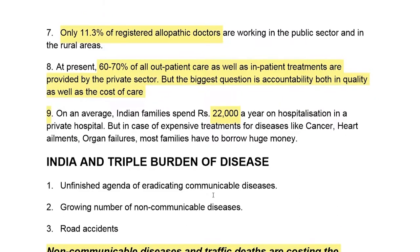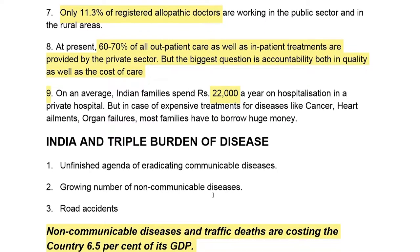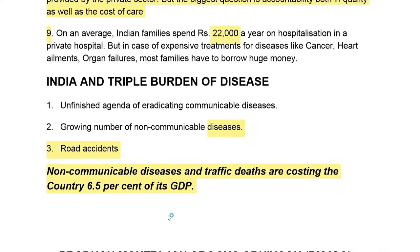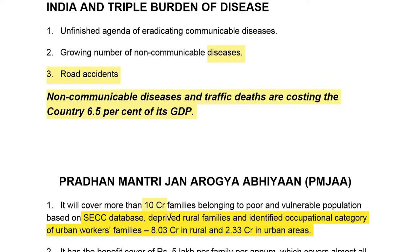The main reasons why the Indian health care system is struggling are three biggest burdens. First, we have an unfinished agenda of eradicating communicable diseases — even today this agenda is not complete. Second, we are seeing more and more non-communicable diseases increasing. Third, road accidents are also a biggest burden in India. Non-communicable diseases and traffic deaths are costing nearly 6.5% of GDP in India. Under such circumstances, Pradhan Mantri Jan Aarogya Abhiyan has come.